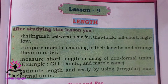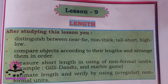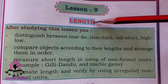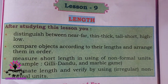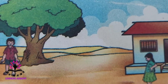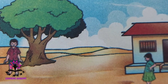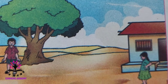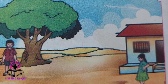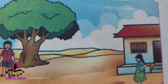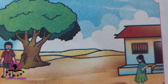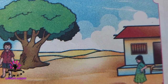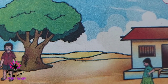Hello students. In today's class we are going to study a new chapter — lesson number nine from your Class 2 Mathematics textbook. Look at the given picture. What do you find in this picture? There is a tree, a house, a boy, and a girl. Now answer my questions.